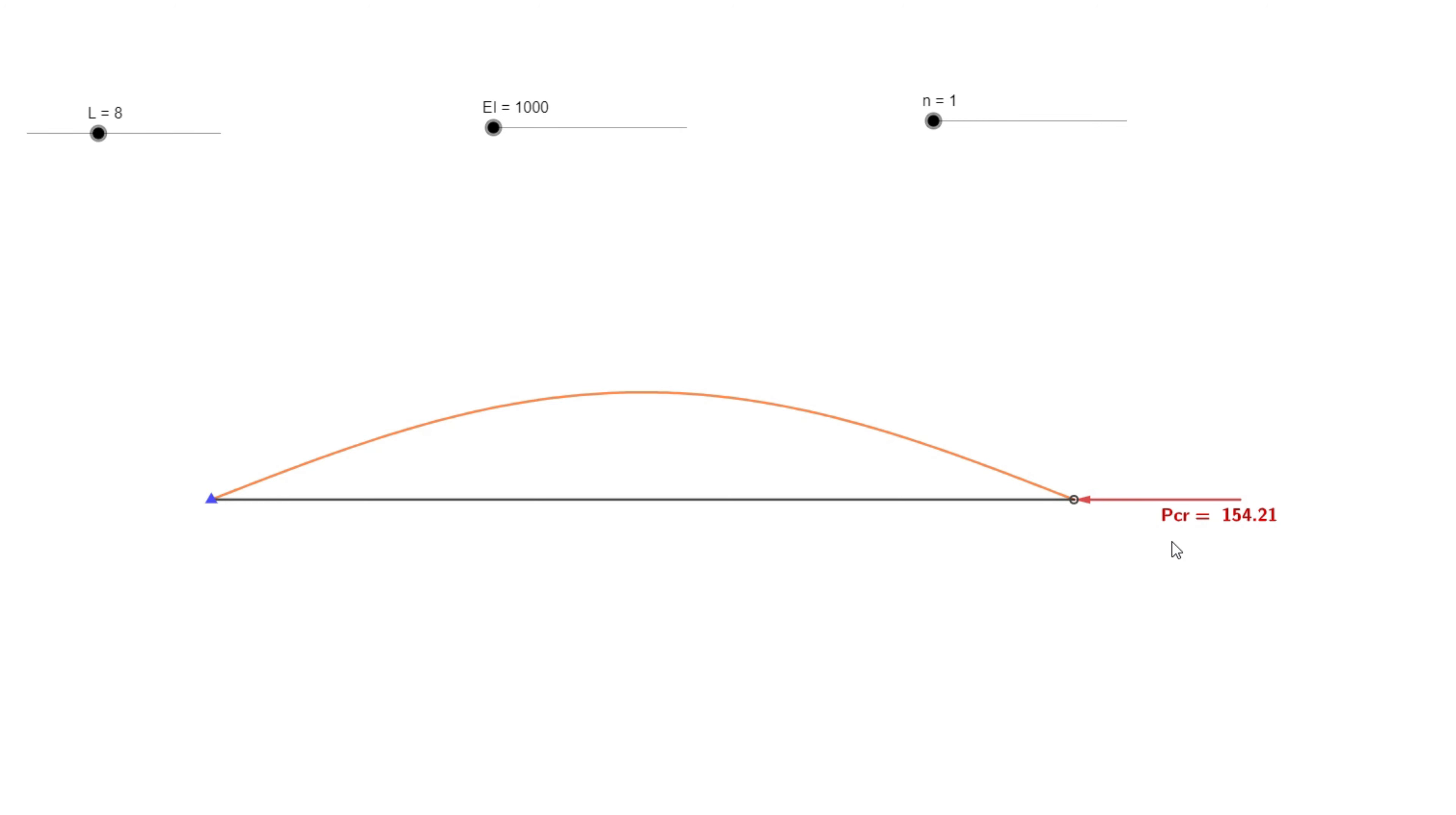Let us have a look together how this would look like and try to make sense out of it. Here in yellow we can see the deflected shape of the beam and in black the original state of the beam. We can also see that P critical is the load required to achieve equilibrium for this specific deflected shape of the beam.